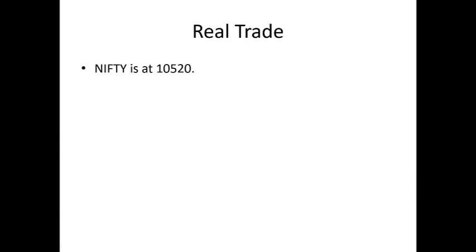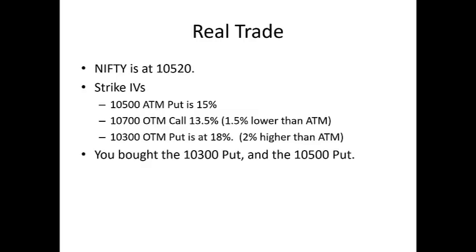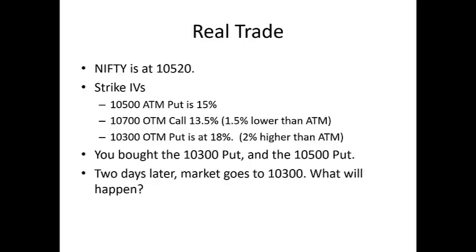Here's a skew curve where ATM IV has been subtracted from all strikes, so you can see just the skew — the difference between ATM IV and other strikes. Let's go through a practical example. Nifty is at 10,520. The 10,500 put IV is 15% (ATM). The 10,700 OTM call IV is 13.5% — which is 1.5% lower than ATM. The 10,300 OTM put IV is 18% — which is 2% higher than ATM. You bought the 10,300 put and the 10,500 put, and two days later the market falls to 10,300.